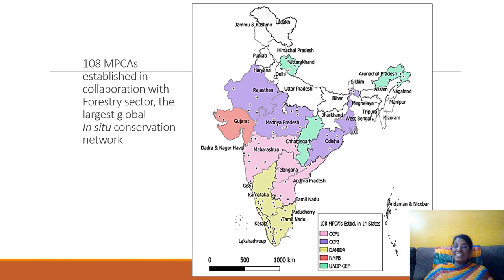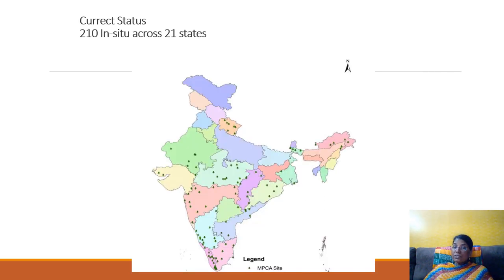These are called MPCAs — Medicinal Plant Conservation Areas. This is a map of India showing the different MPCAs that have been established. Thus far, about 108 MPCAs have been established with forest departments and state medicinal plant boards. Based on the importance of this in-situ program, the National Medicinal Plant Board has also joined, and today we have a total of about 210 MPCA areas in the country.